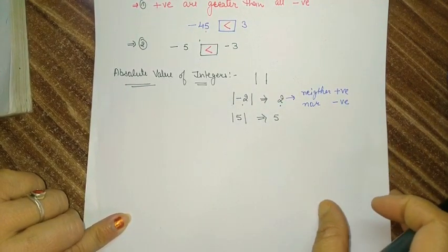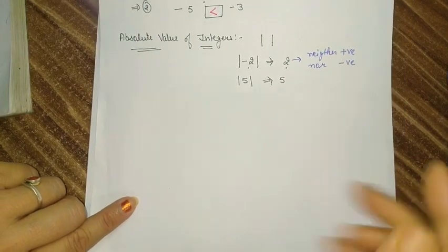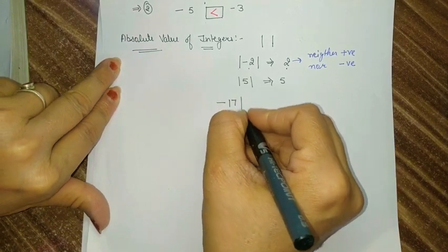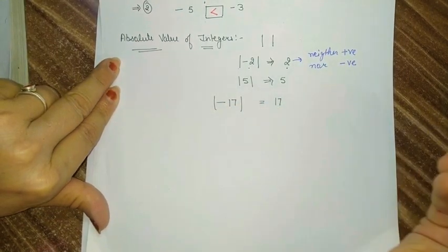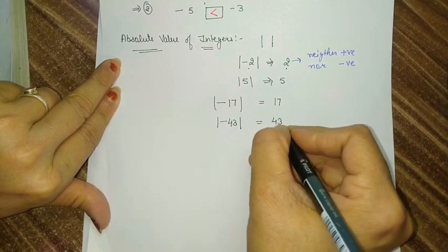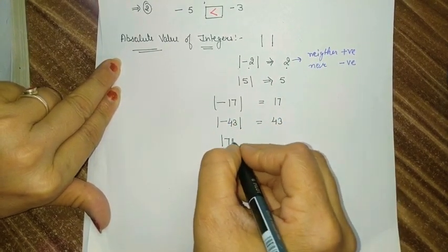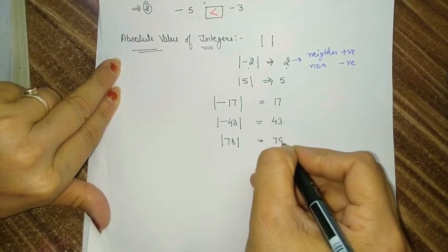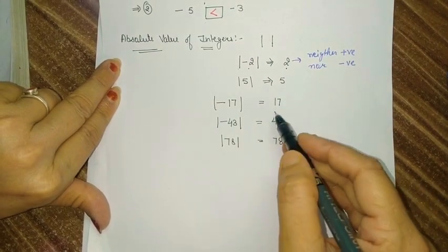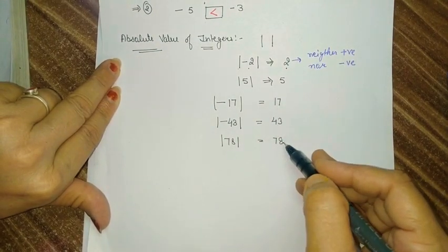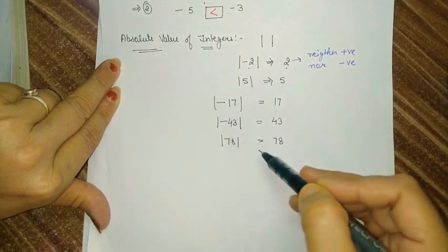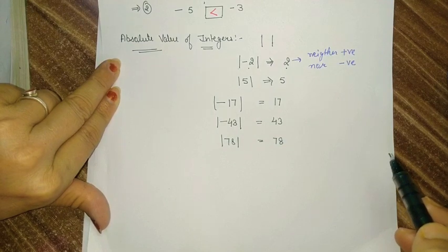I hope you understand absolute value. Let me explain with more examples. The absolute value of 17 is 17 only. Minus 43 — the absolute value is 43 only. 78 — the absolute value is 78. It's simple students, nothing special to do — we only have to write the number without any sign. That is the absolute value of the given number.